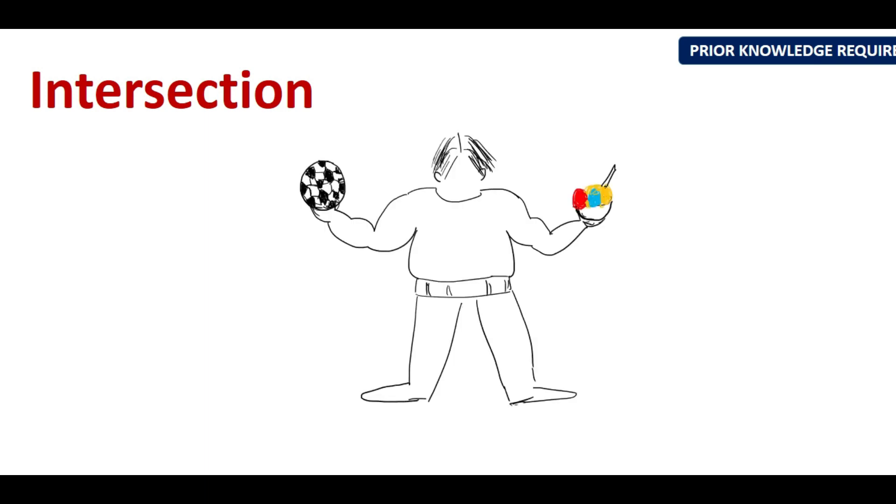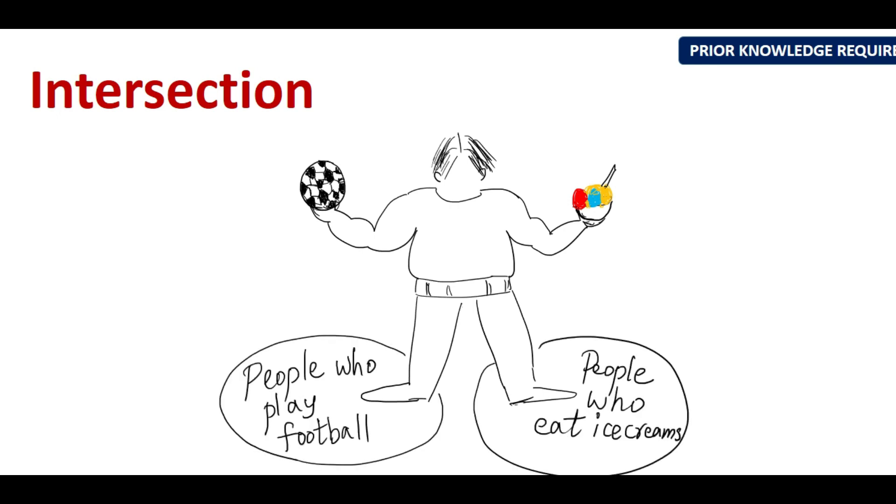Intersection is when you have a person who can play football and he prefers eating ice creams. So when you are trying to sort people between playing football and eating ice creams, he is that guy that falls in both the categories. So to identify such people on a Venn diagram, we use an intersection, which is an inverted U. Now you can see intersection in, that means the data that falls in both the categories.